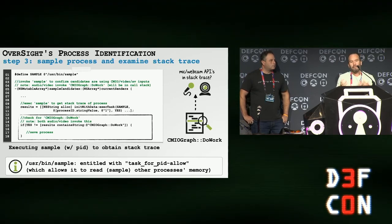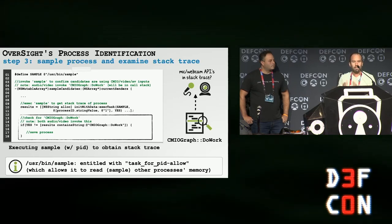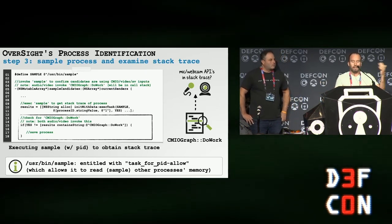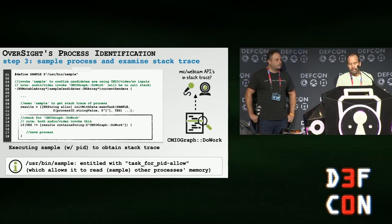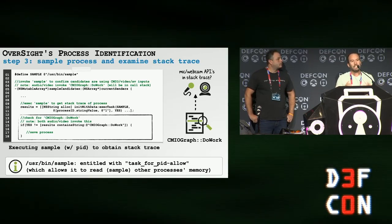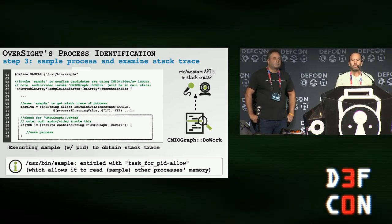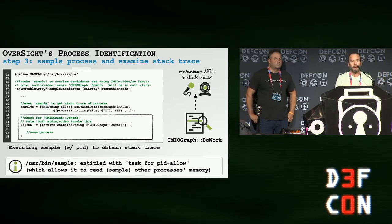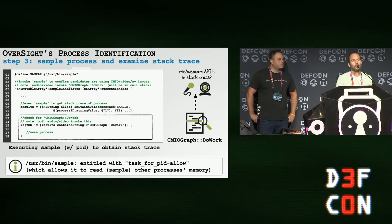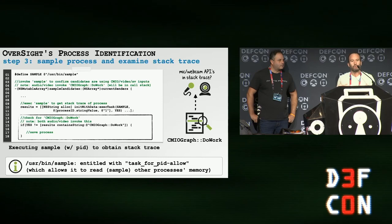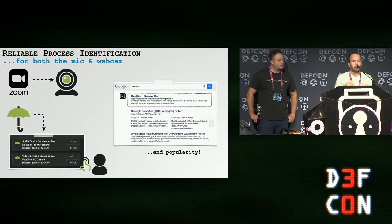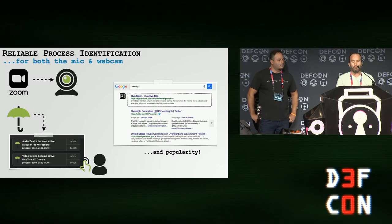Because this list might also have several PIDs, Oversight does one final step if we still don't have a single process: we sample candidate processes, read their remote memory, look at their stack traces, and examine the APIs they're actively calling. macOS doesn't allow this directly — you need special entitlements — but there's a command-line utility called sample that we can execute against the target process. We look specifically for the CMIO graph do work function, which is related to reading frames off either the mic or the webcam.